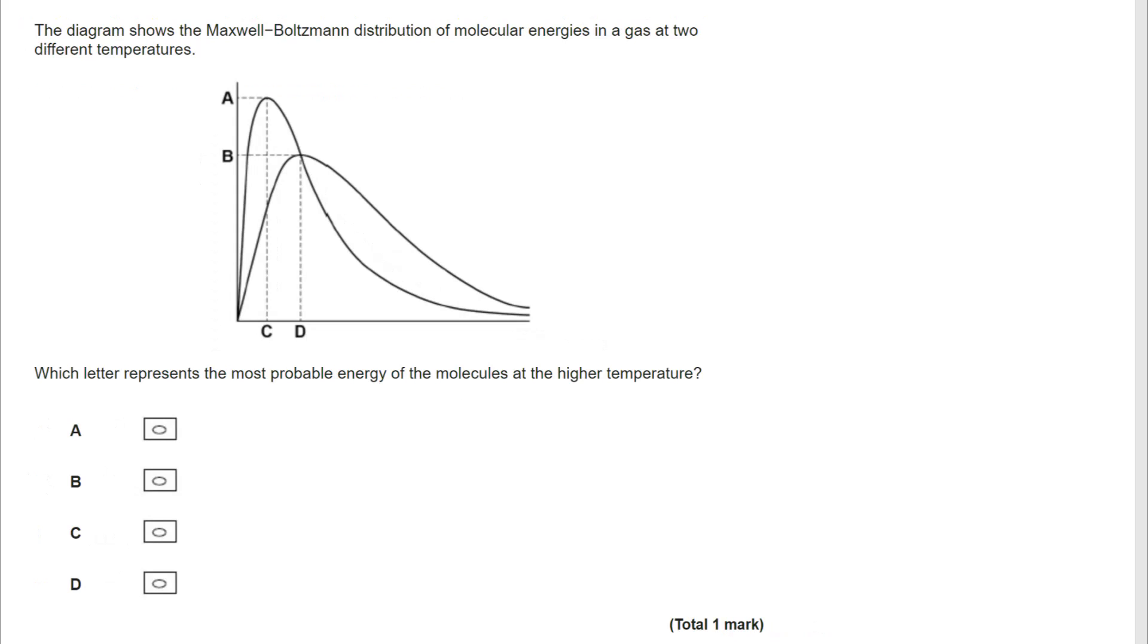And on this one, we have got two Maxwell-Boltzmann curves. We've got the same reaction taking place at different temperatures. And we want to know here the most probable energy at the higher temperature. Now, once again, we remember that energy is the x-axis, so our answer has to be C or D. We're down to 50-50.